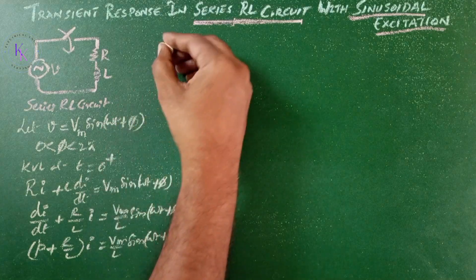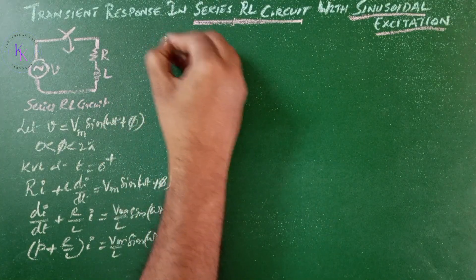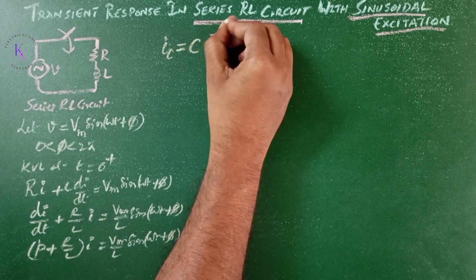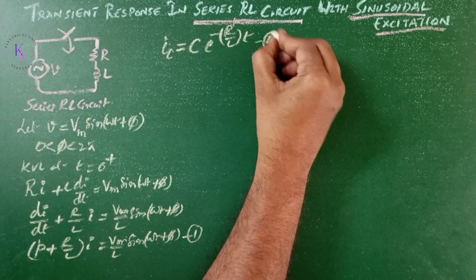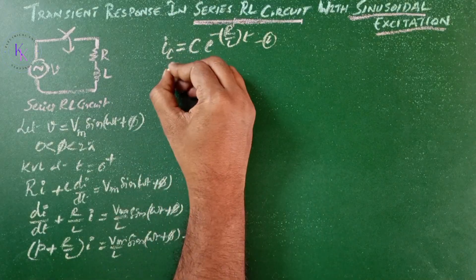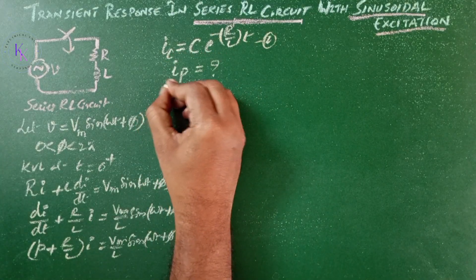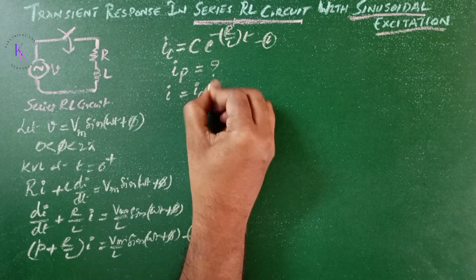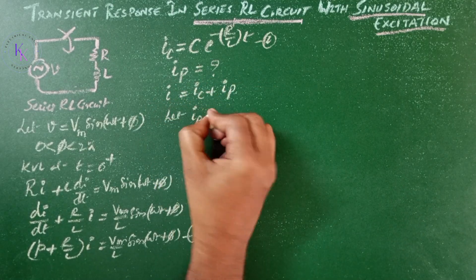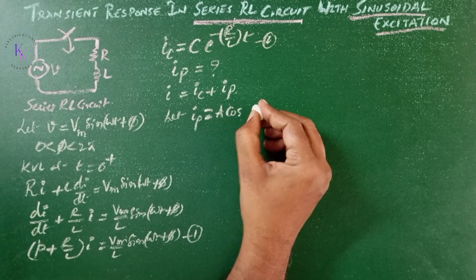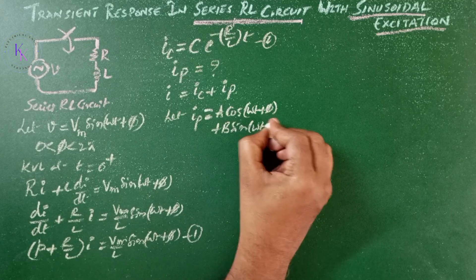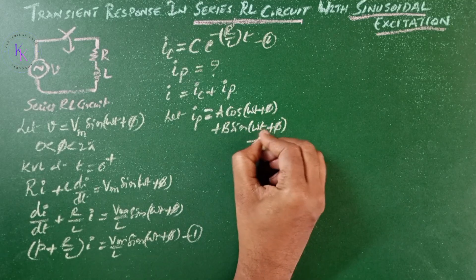The complementary function is given by Ic = C·e^(−R/L·t), equation number 2. Next we need to obtain the particular solution for the current Ip. The complete solution will become I = Ic + Ip. Let Ip = A·cos(ωt + φ) + B·sin(ωt + φ), equation number 3, where A and B are unknown constants.